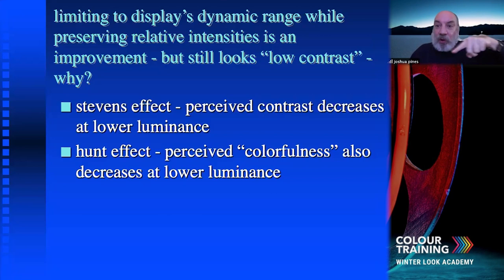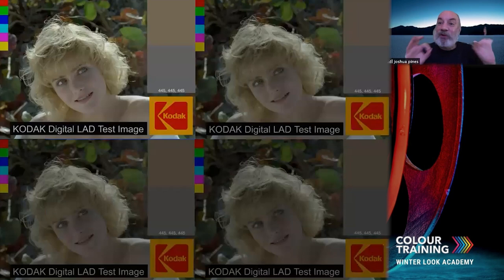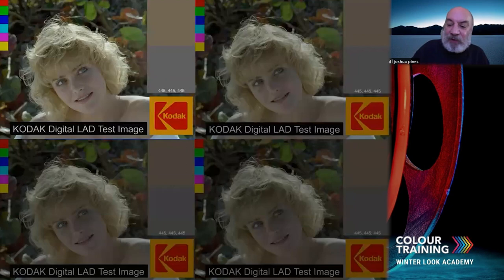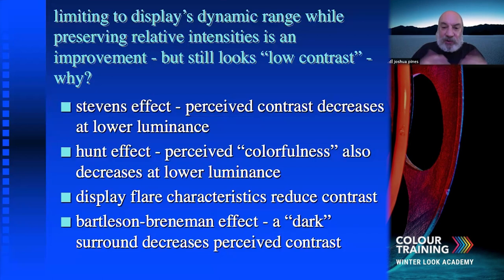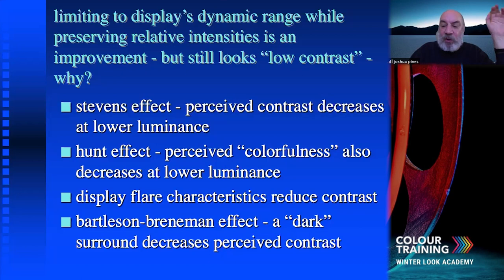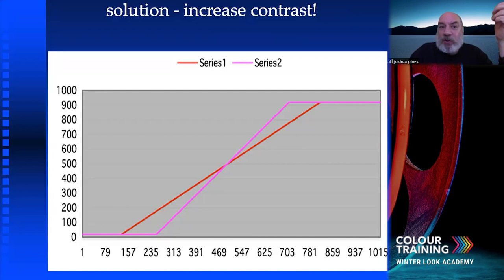Why color science? If you show something at a lower luminance, the human visual system perceives it as lower contrast — same with colorfulness. Here's an example: all four of these pictures have the same dynamic range, just shown at lower luminances, and as you can see, the lower the luminance, the lower the perceived contrast. A few other things: display flare always reduces contrast — especially important in movie theaters. And surround conditions matter too — a dark theater versus watching TV with the lights on in your living room. All of these factors are important.